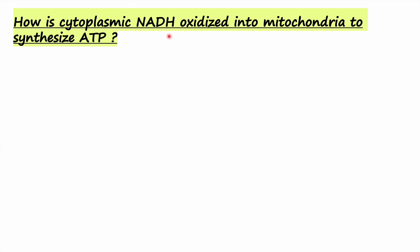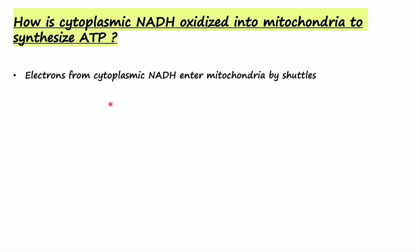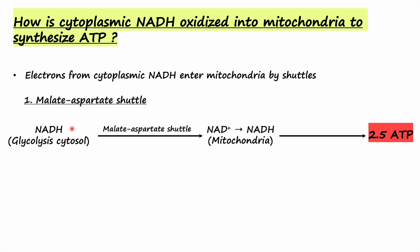The question is how this cytoplasmic NADH is oxidized in the mitochondria to synthesize ATP. There is a shuttle system which helps carry these electrons from cytoplasmic NADH into the mitochondria, and there are two different types of shuttles. One of these shuttles is called the malate-aspartate shuttle. Through this shuttle, electrons from NADH in the cytosol are carried across the mitochondrial membrane, and in the mitochondria these electrons are passed on to NAD+, which is reduced to NADH. This NADH then gives up its electrons to the respiratory chain to synthesize ATP — one NADH synthesizes 2.5 molecules of ATP. So basically through the malate-aspartate shuttle, one cytosolic NADH synthesizes 2.5 molecules of ATP in the mitochondria.